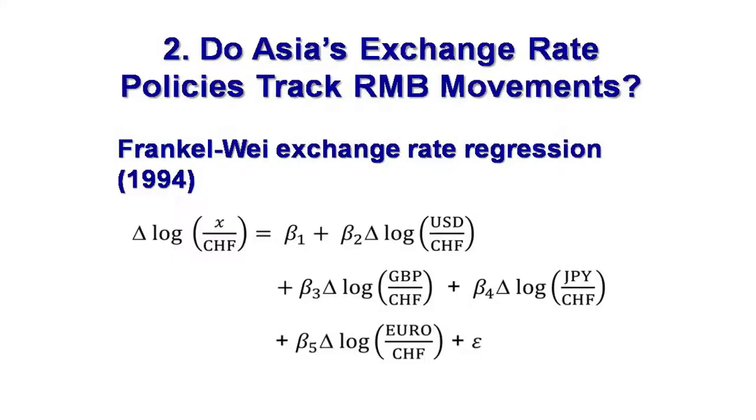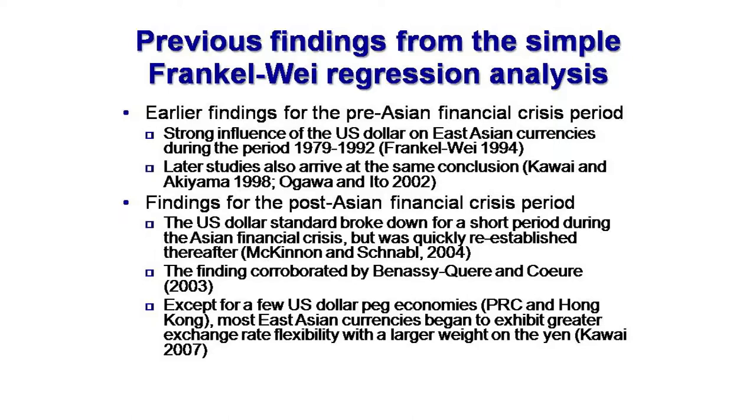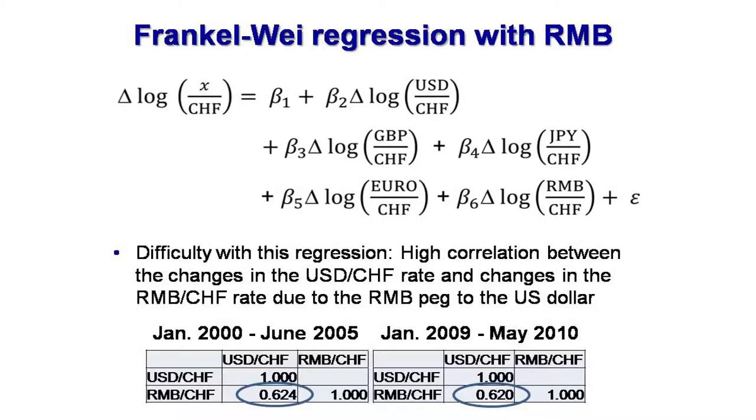Perhaps it may make some sense for some economies, in particular in Asia, to try to track the renminbi exchange rate in their exchange rate policies. What we do is apply a very simple method to understand East Asian countries' exchange rate arrangements — to what extent do they depend on the renminbi exchange rate movement. We add the renminbi exchange rate to the Frankel-Way equation. The problem is that on the right-hand side we have the U.S. dollar and the renminbi, which creates a very strong multicollinearity problem.